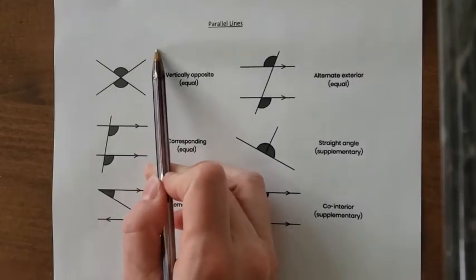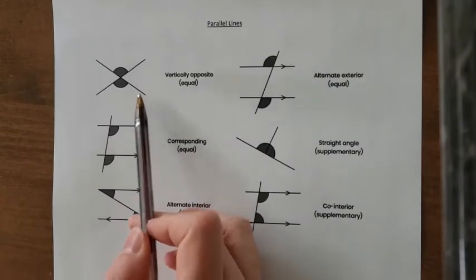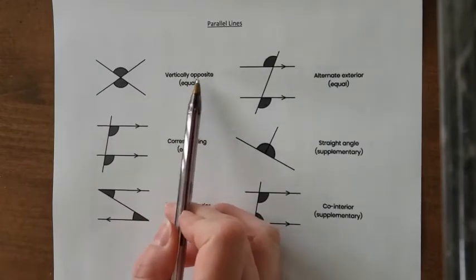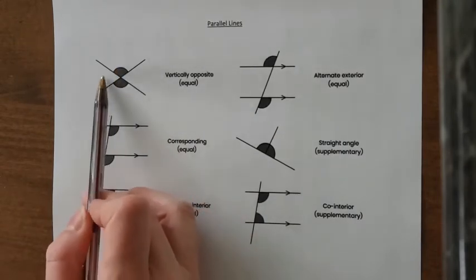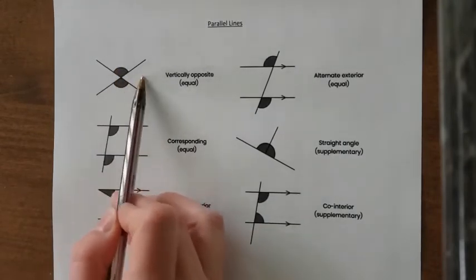When you have two that make a cross, I realize this is not parallel, but they're called vertically opposite, and the opposite angles are equal to each other. So these two are equal to each other, and actually this one and this one are equal to each other as well.